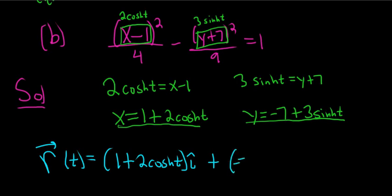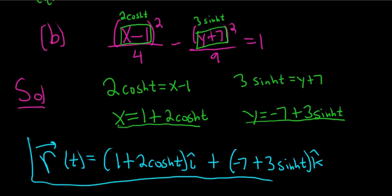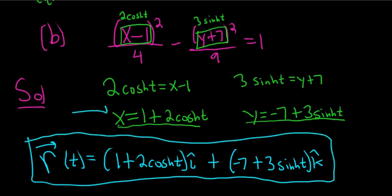So that would be negative 7 plus 3 sinh t, and that would be j hat there. And there it is. So this would be the vector-valued function, and these would be the parametric equations.